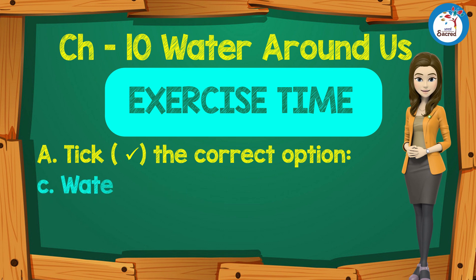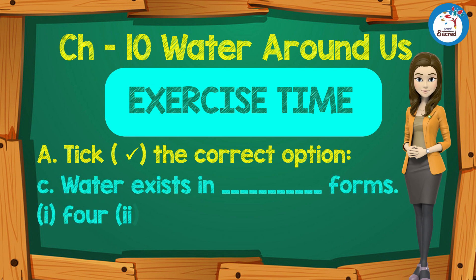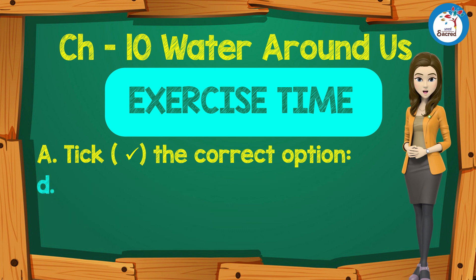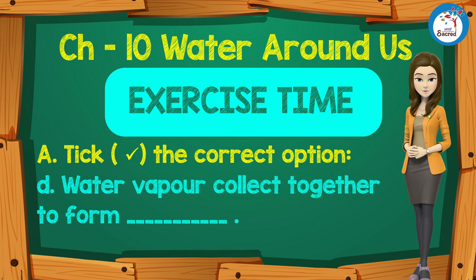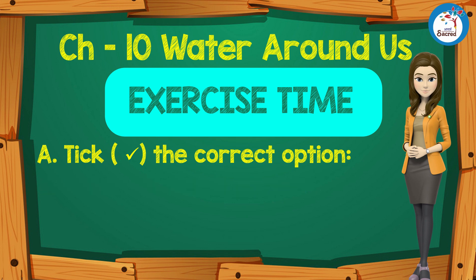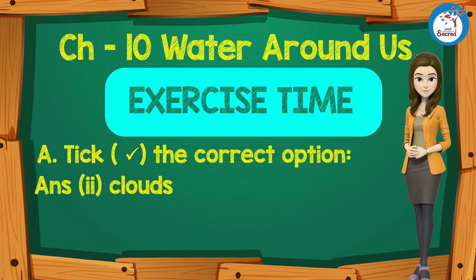C. Water exists in how many forms? First — four, Second — three, Third — five. Answer: three. D. Water vapor collects together to form: First — water, Second — clouds, Third — sea. Answer: clouds.